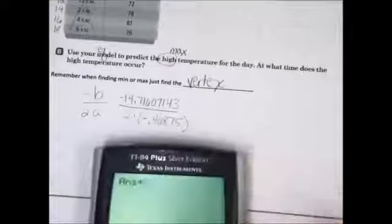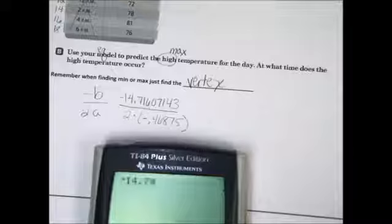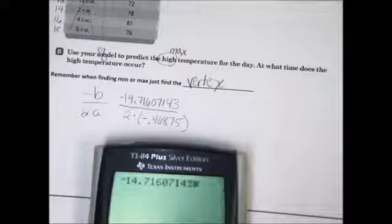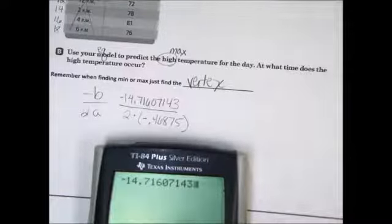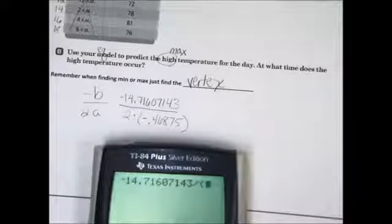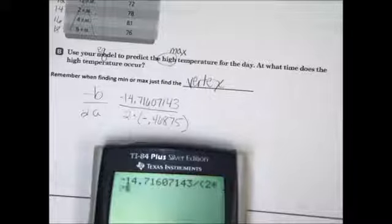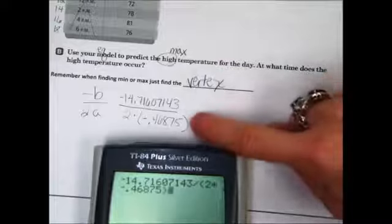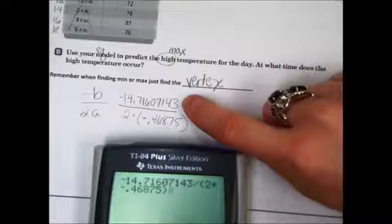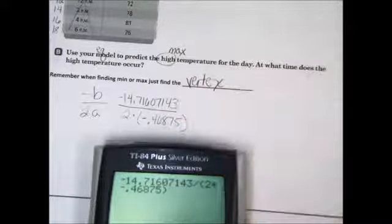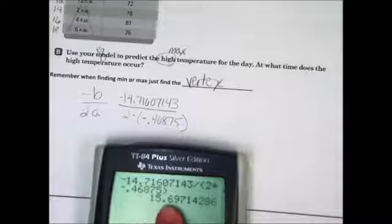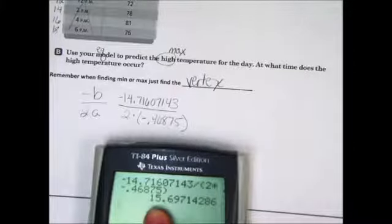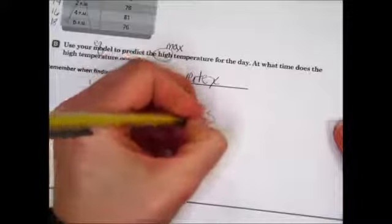Let's put this on there and figure out what our predicted maximum will be. What's the high temperature of the day? There we go. Negative 14.71607143, and we are going to have to divide that by the quantity, don't forget your parentheses there, 2 times negative 0.46875. Close your parentheses. I'm going to double check everything. Hit enter. That is x. So we'll, this time we'll actually round. We'll just make that 15.7.